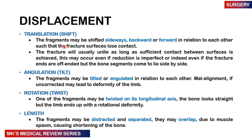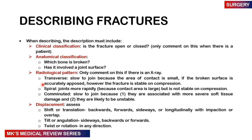With rotation or twist, one fracture segment may be twisted on its longitudinal axis — the bone may look straight but the limb ends up with a rotational deformity. With length displacement, fractures may be distracted or separated, or overlap due to muscle spasms that cause shortening of the bones.